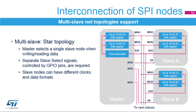When the SPI network includes more than one slave, a star topology is commonly used. The master communicates with one slave at a time, selected by its slave select input. In this topology, a separate slave select signal from the master has to be provided to each slave node, so the master can select which slave to communicate with via a dedicated GPIO pin. Thanks to separate slave select signals, SPI data and clock format can be adapted for each slave if the multiple slave nodes do not have a common configuration.